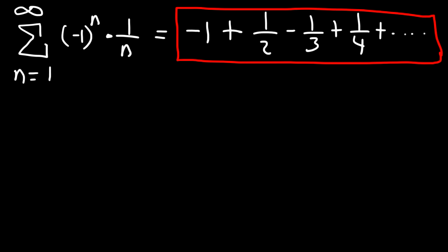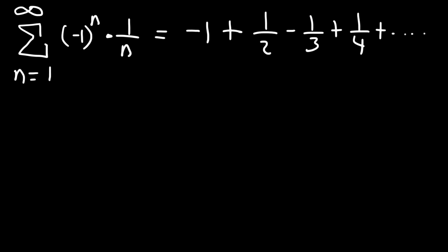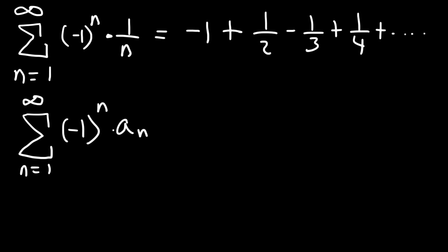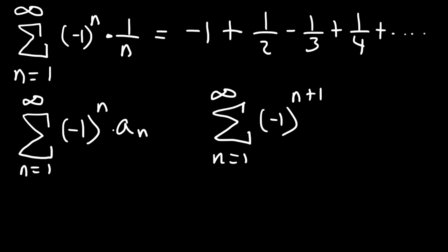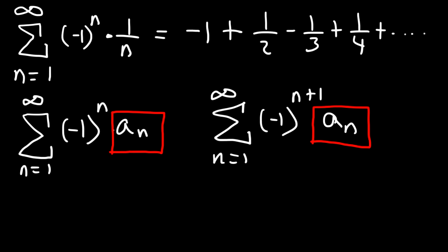Will the alternating harmonic series converge or diverge? Let's apply the alternating series test. The series needs to be in one of two forms: negative 1 to the n times a sub n, or negative 1 to the n plus 1 times a sub n. That exponent just controls the sign, making it positive or negative. And a sub n is the sequence, which we say is positive — greater than zero.